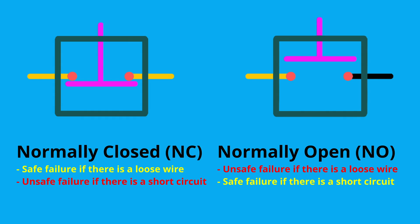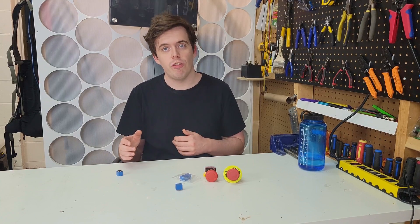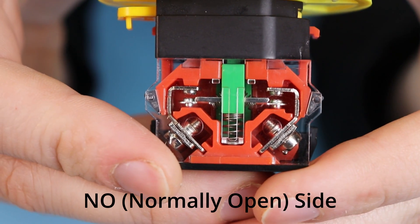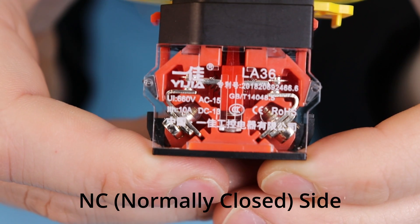So in summary, the normally closed and normally open switches have opposite failure modes. A normally closed switch will fail in a safe manner if there's a loose connection, but will fail in an unsafe manner if there's a short connection, and vice versa for a normally open switch. That's why, for the most robust implementation of an emergency stop button, you should use one that has both normally closed and normally open modes, such as this emergency stop button.